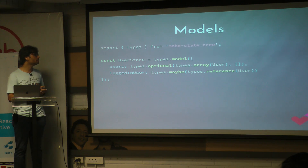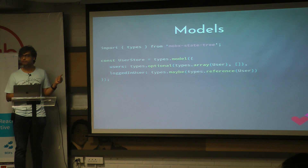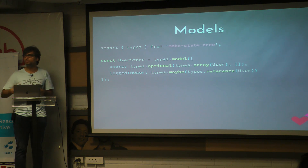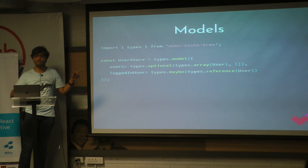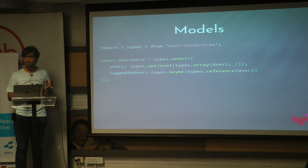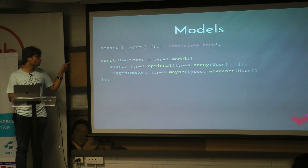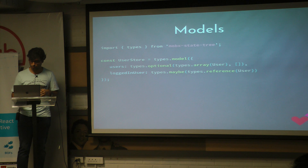Similarly, you can have models compose other models. So you can have a user store which takes an array of the same user model, as well as something called a reference to a user. There are quite many times when you want to store — let's take the example of a selected tool — you want to track which tool was actually selected. In those cases, you can use a reference type, which will just store the ID of the model it's referencing. But if you inspect the property, it will actually give you the whole user object.